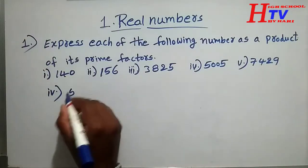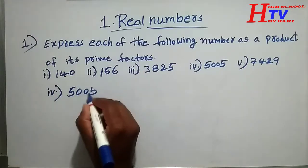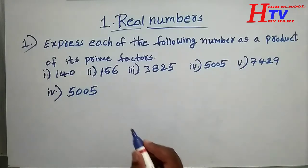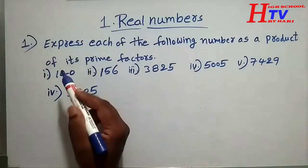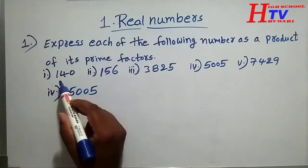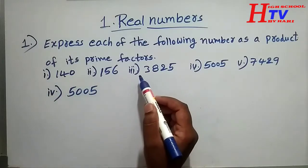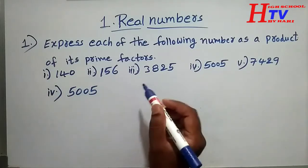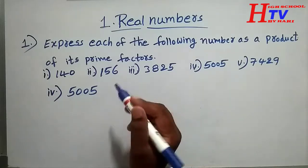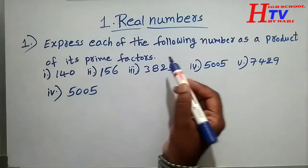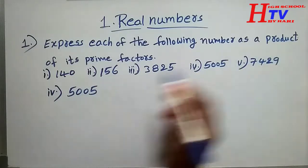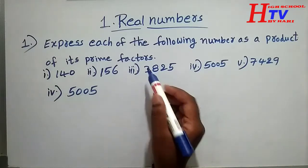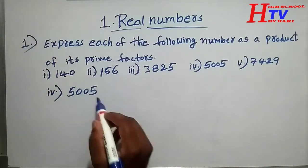This is the fourth question: five thousand five. Solution of first, second, and third video links are given in the description. Express each of the following number as a product of its prime factors. The fourth question is five thousand five.